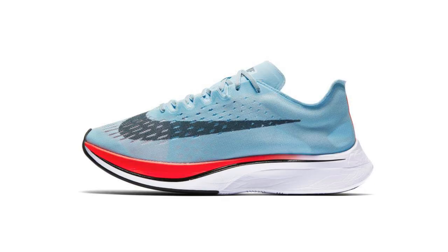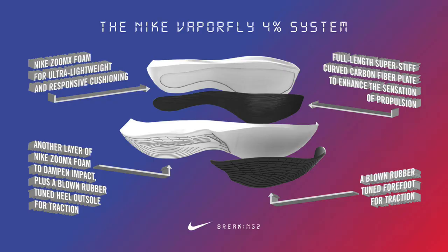In 2017, Nike dropped the Vaporfly 4%. This was the original super shoe that kicked everything off. There was a bunch of technology in this shoe that was quite important, and Nike had spent literally five to six years developing this shoe and a lot of the technologies in it. One of the really important pieces was that carbon fiber plate and how it's sandwiched between two pieces of what everyone was calling super foam at the time, but now we know as Nike ZoomX foam.